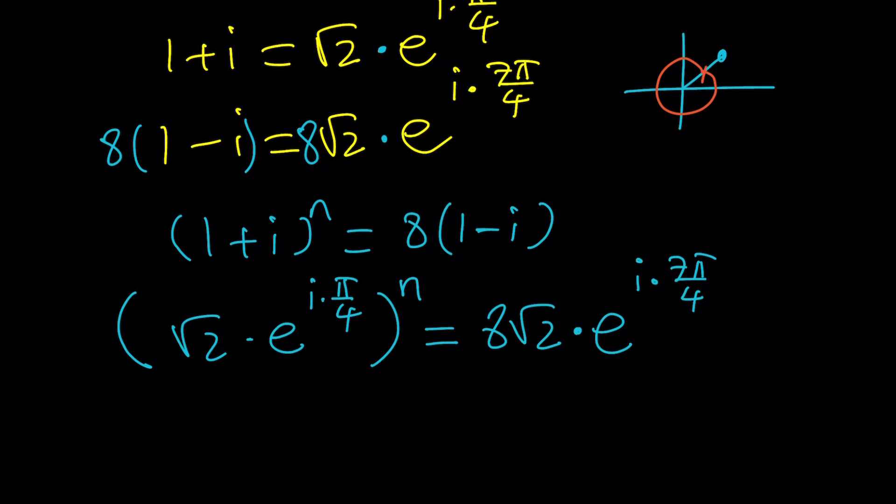Notice that any θ can be added to 2π to produce the same angle. Therefore, they are basically vary by a period of 2πi.